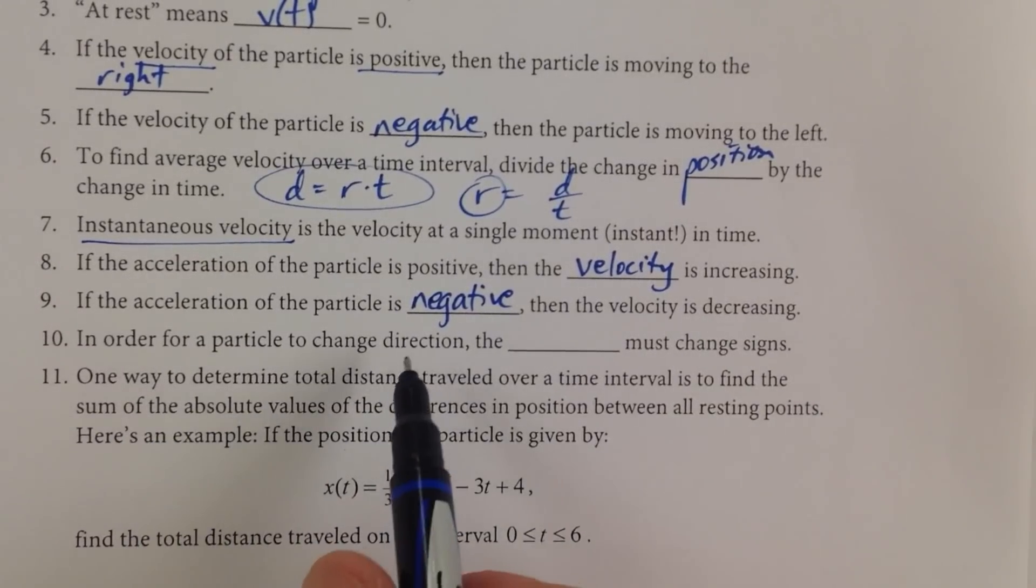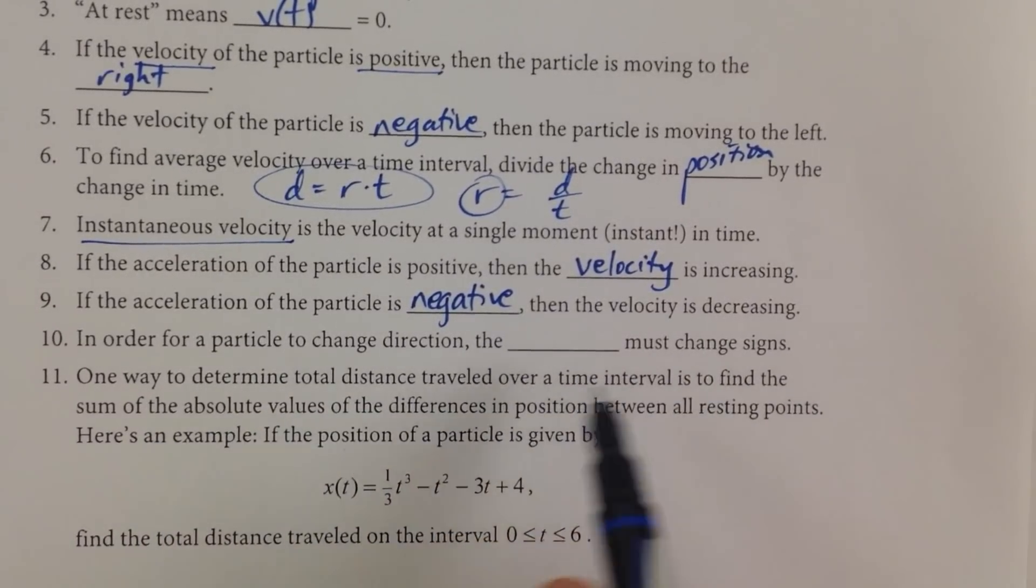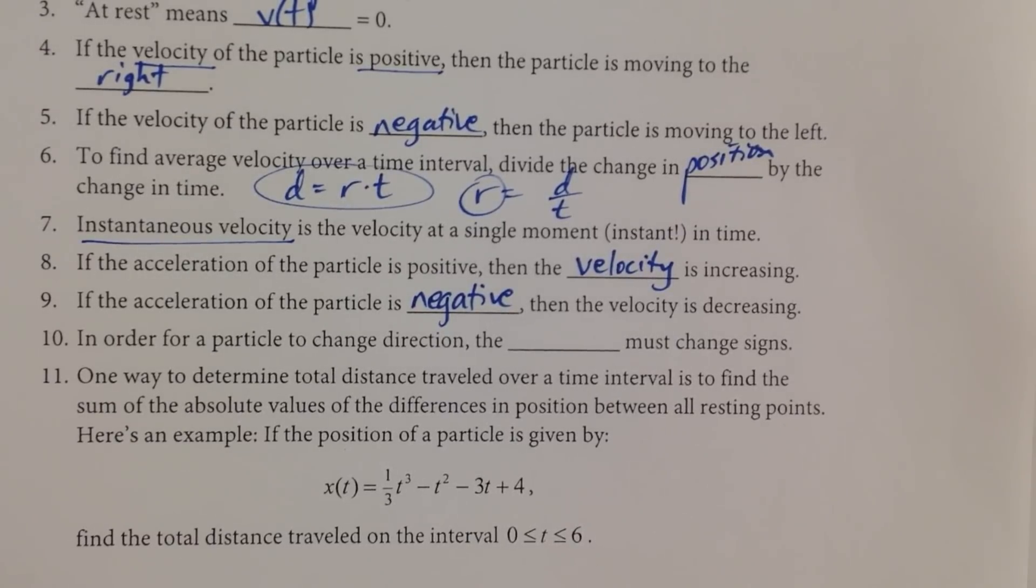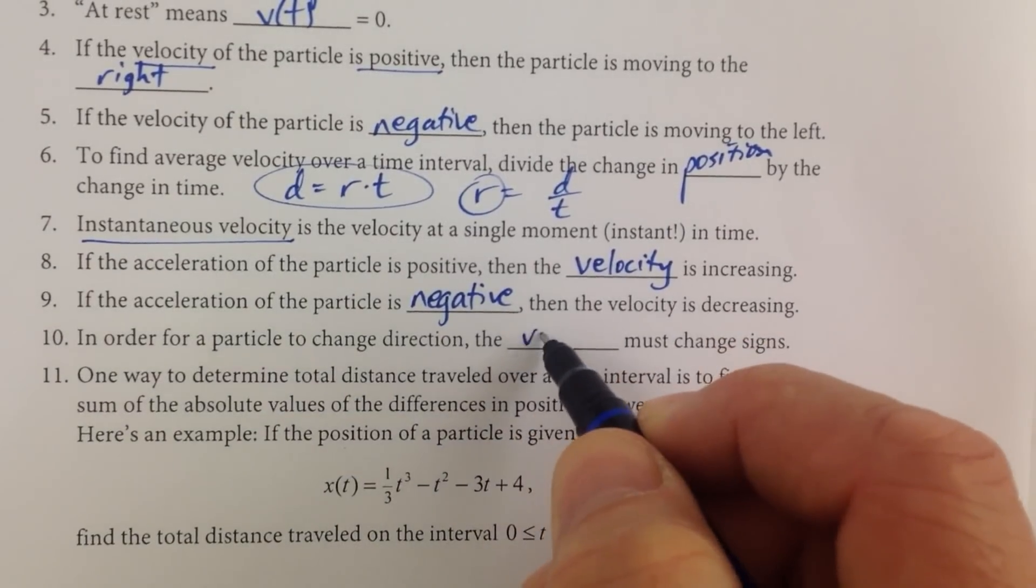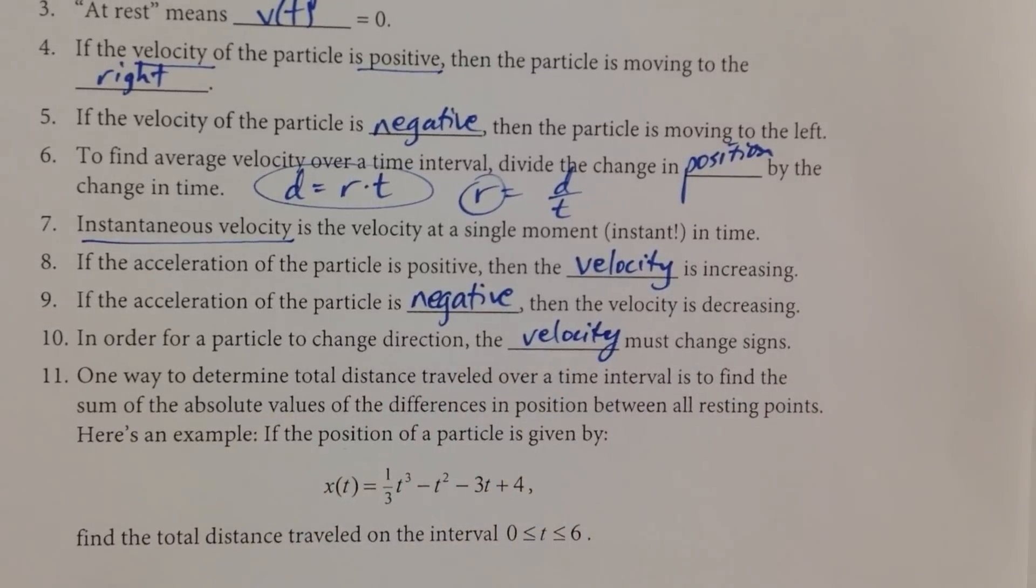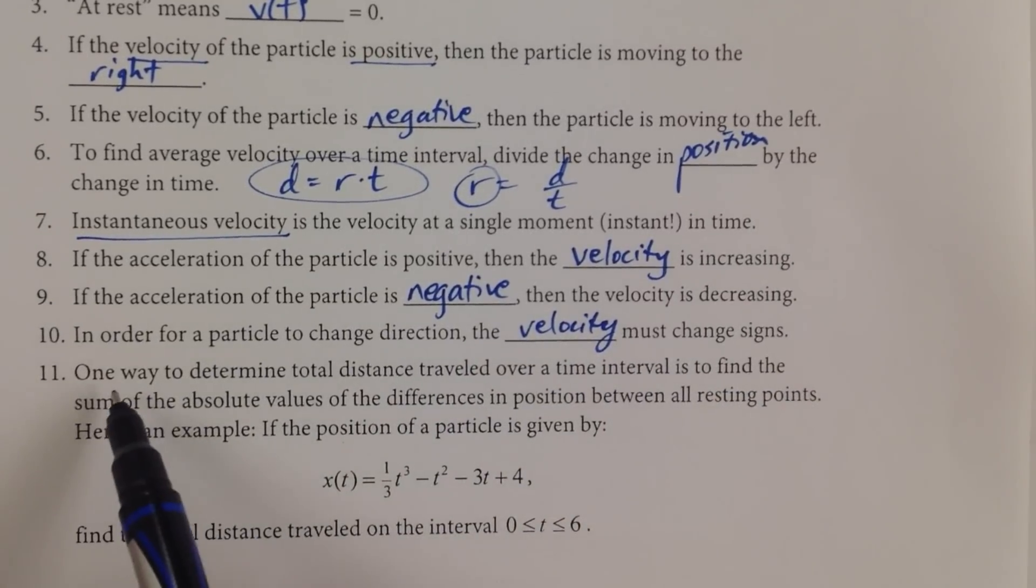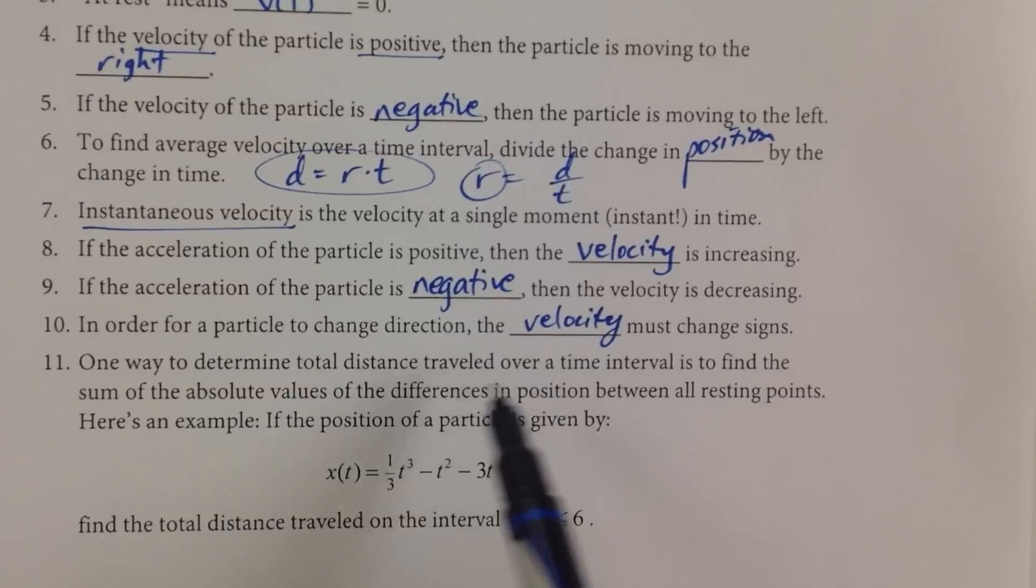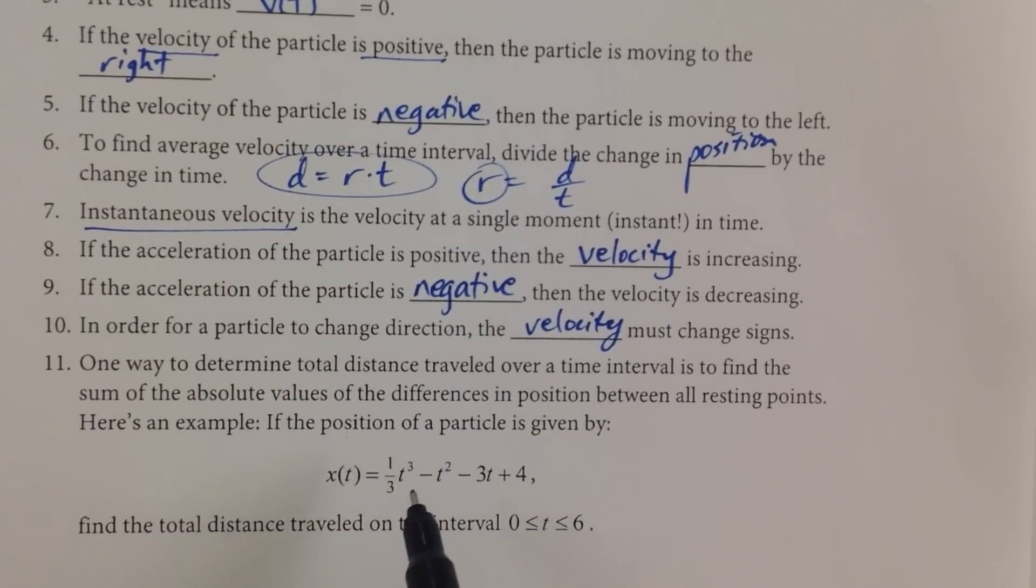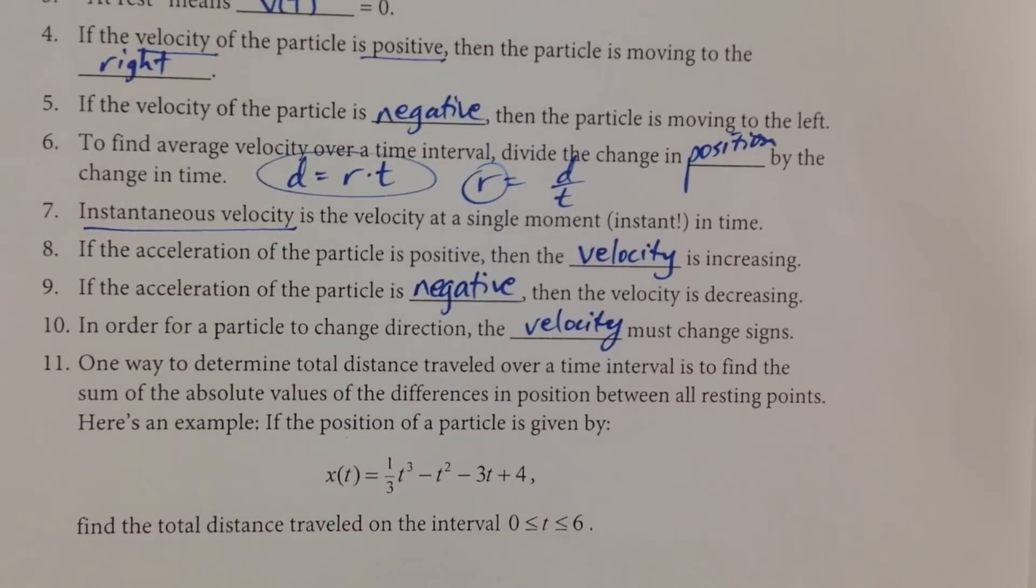In order for a particle to change direction, the blank must change signs. So direction would be velocity. So velocity gives us direction. So this has to be the velocity. Must change signs. And then if the, let's see, one way to determine total distance. So we're going to hold off on this guy right here. And we're going to pick it up in the next video.